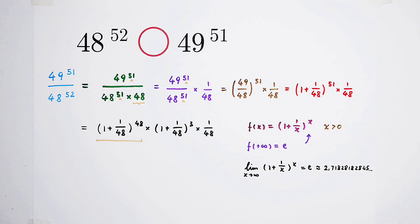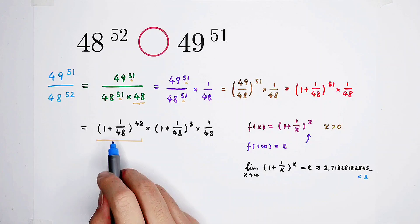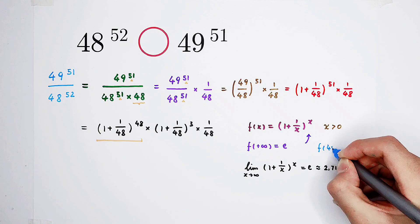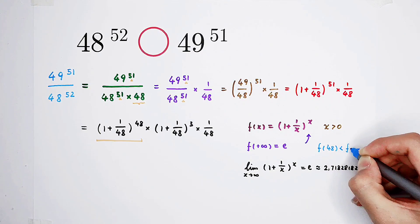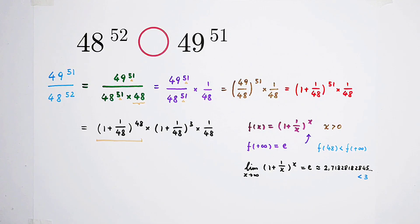I don't have any place here. Sorry. e is equal to this. It is, of course, smaller than 3. Obviously. f of x is increasing. And 48 is smaller than positive infinity. So we can get f of 48 is smaller than f of positive infinity.